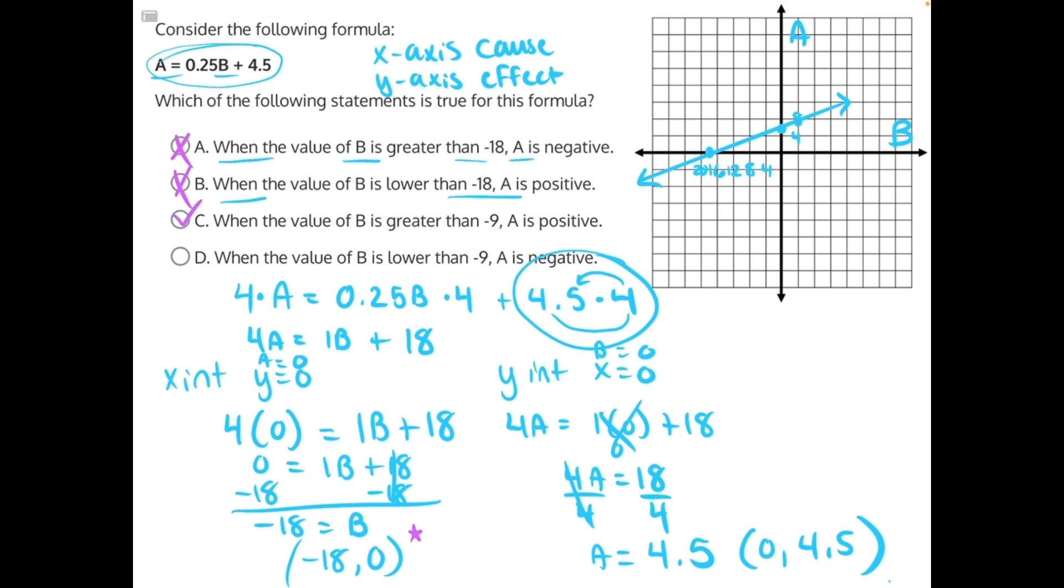But let's take a look at why D is incorrect. When the value of B is lower than negative 9, A is negative. That's not true because of this stretch of values right here. This stretch of values is positive A values, then it descends into negative A values. So the A values are not negative the whole time, which makes D incorrect, and makes C our correct answer.